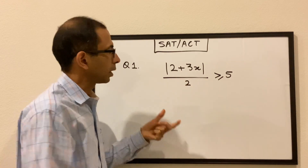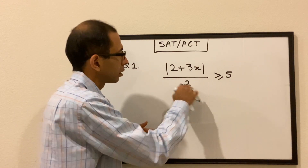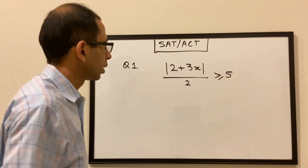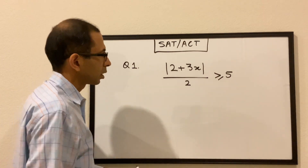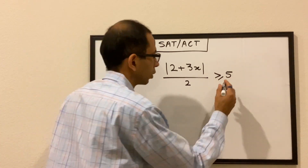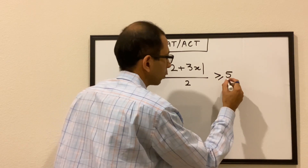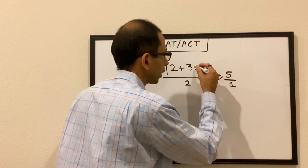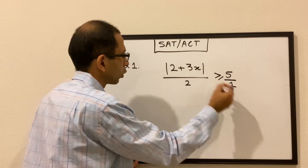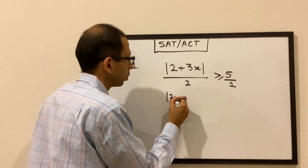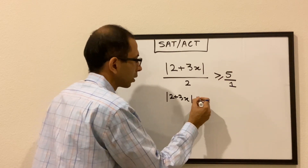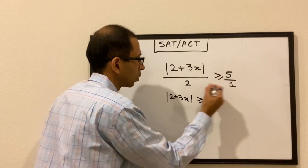The absolute value of (2 + 3x) divided by 2 is greater than or equal to 5. The first thing we can do is note that 5 is 5 over 1, and then we cross multiply. When we cross multiply, we get 2 plus 3x is greater than or equal to 10.